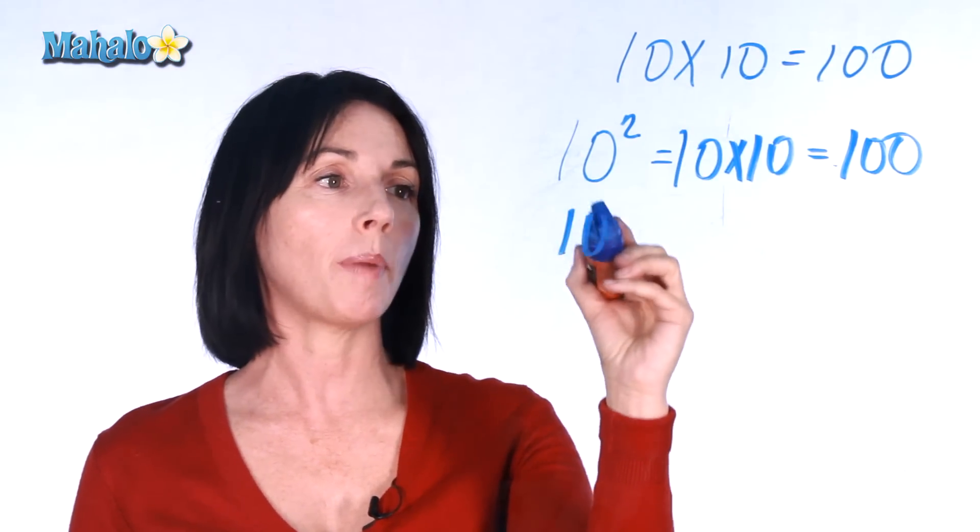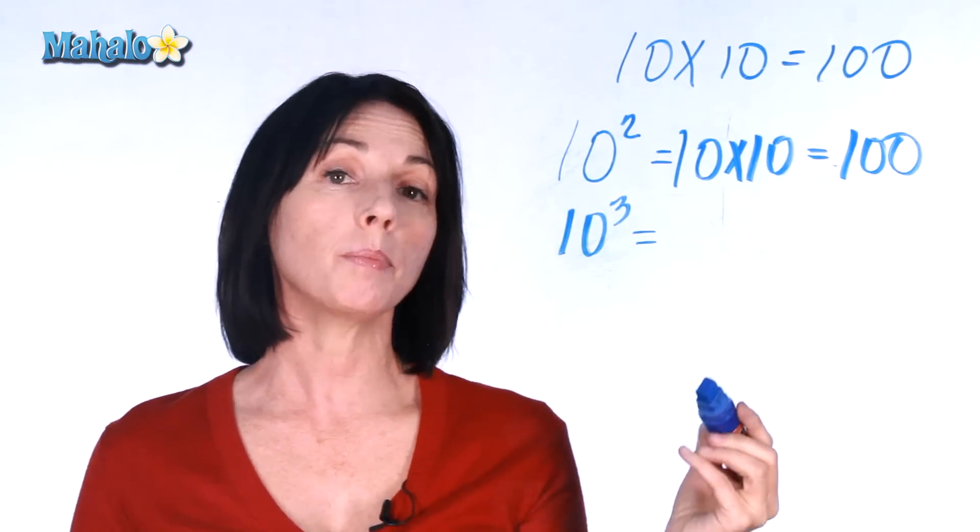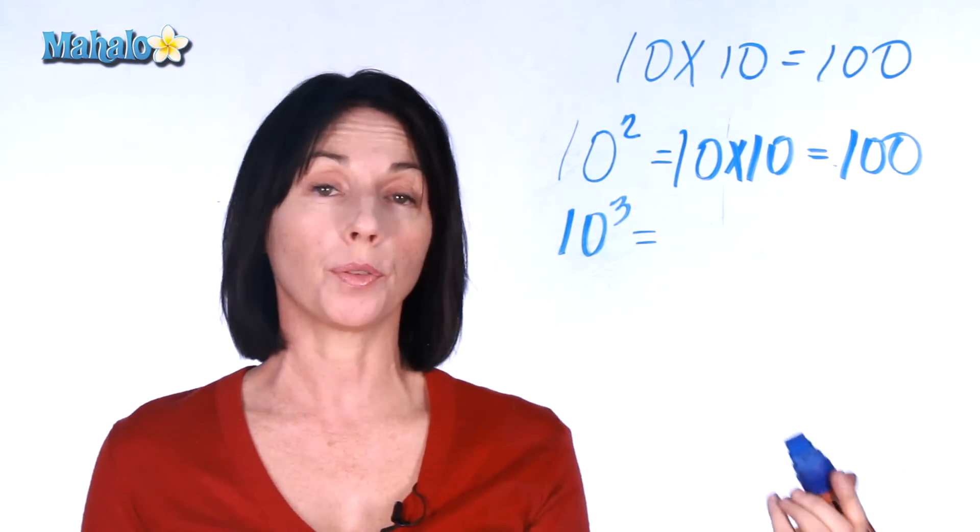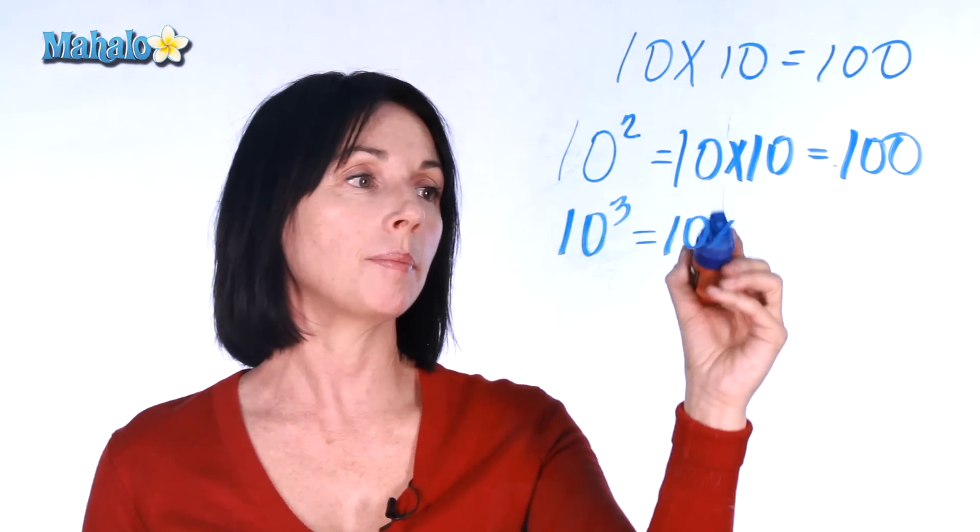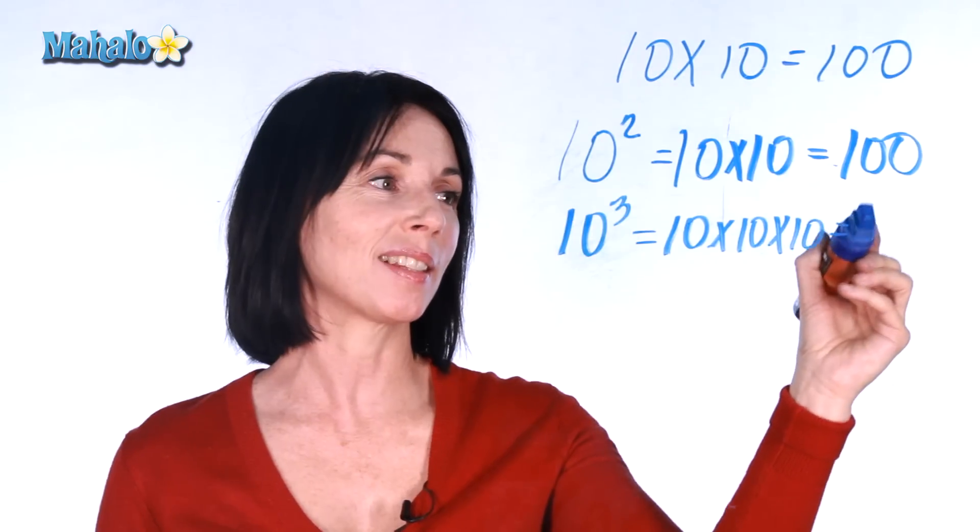So let's look at 10 to the power of 3. That just means we multiply 10 by itself three times. So 10 times 10 times 10, and that equals 1,000.